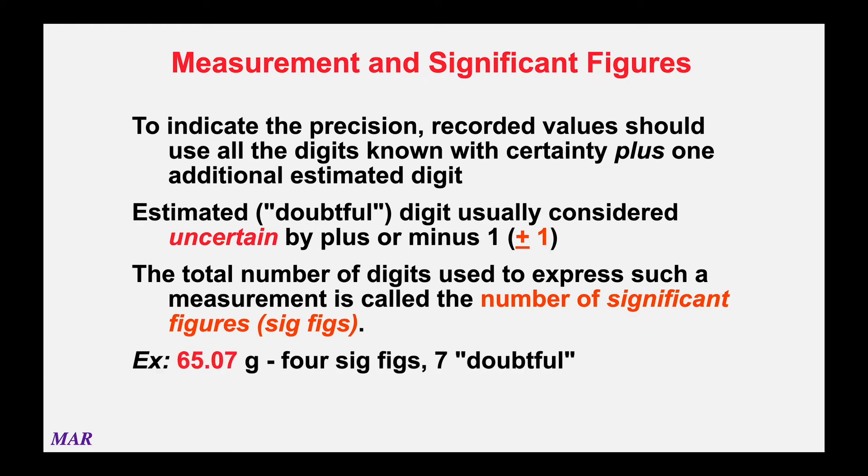Here's some examples. 65.07. The last digit is the doubtful, so the 7 here is the doubtful digit. And 65.07 has four significant figures. The 6, the 5, the 0, and the 7. Those are all significant. Even the doubtful digit counts as a sig fig. So four sig figs, seven is the doubtful digit. The 7 is the hundredths position.